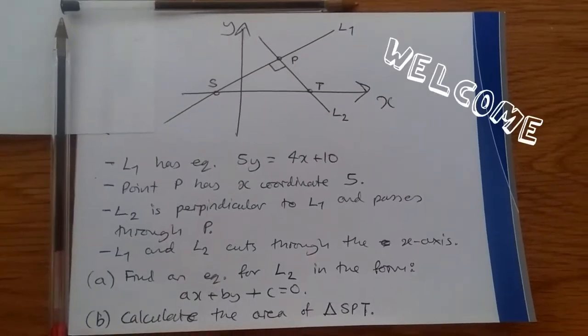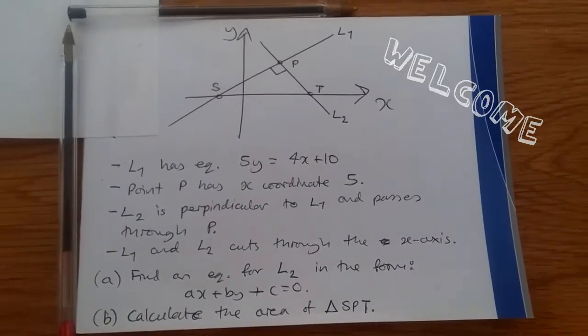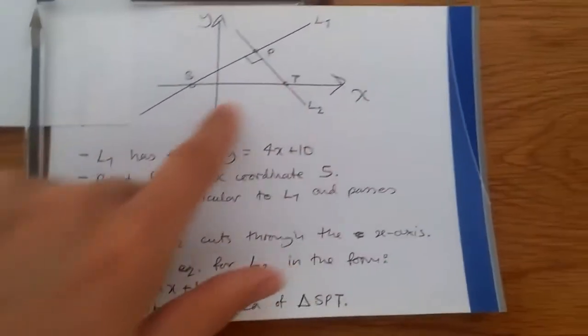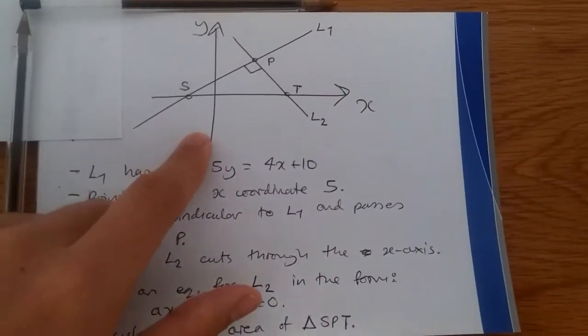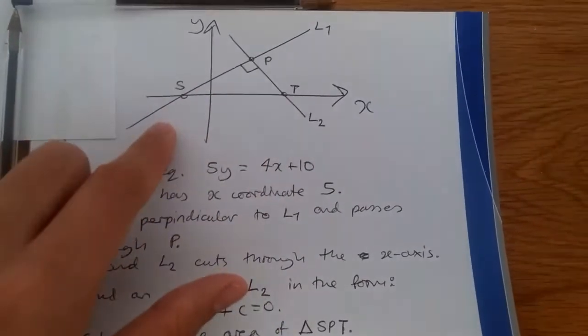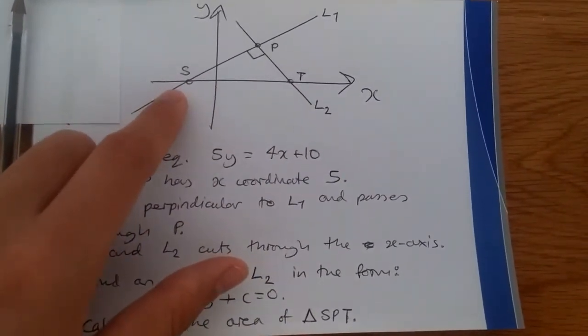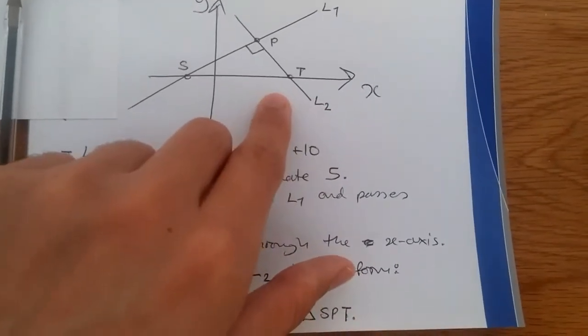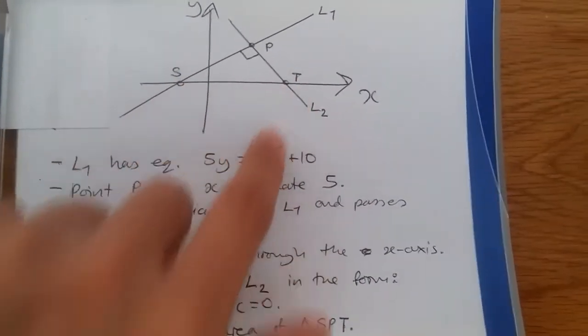Okay, question 8. So here we're looking at coordinate geometry. Now here, thankfully, we're given a nice simple chart, a nice simple graph which isn't too bad to look at. We find that we've got S which crosses the x-axis and also T that also crosses the x-axis at lines L1 and L2 respectively.